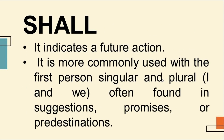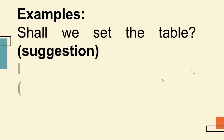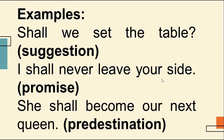'Shall' indicates a future action and is more commonly used with the first person singular and plural — I and we — and is often found in suggestions, promises, or predestinations. You can also notice that 'shall' is used in future tense. Examples: 'Shall we set a table?' 'I shall never leave your side.' 'She shall become our next queen.' So if you want to express a suggestion, promise, or predestination, you use 'shall.'